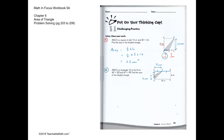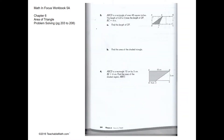Looking at this triangle, the base is 4 and the height is 9. The area equals half base times height: half of 4 times 9, which is 18 centimeters squared.